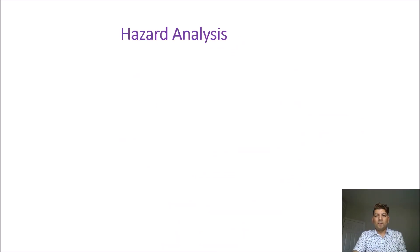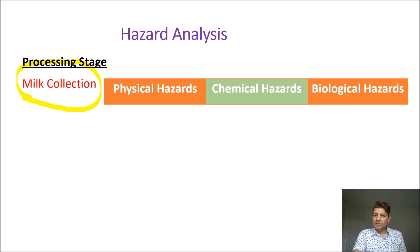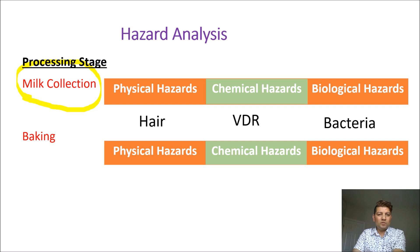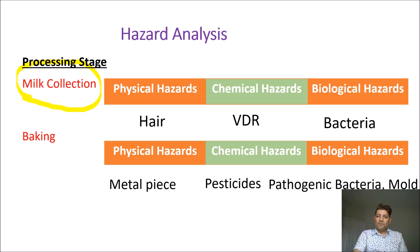Now let me explain these seven principles in detail with examples. For hazard analysis in a dairy, during milk collection: a physical hazard could be hair, a chemical hazard could be veterinary drug residue, and a biological hazard could be harmful bacteria. In a baking industry, during baking: metal pieces could be a physical hazard, pesticides could be a chemical hazard, and pathogenic bacteria and molds could be biological hazards.